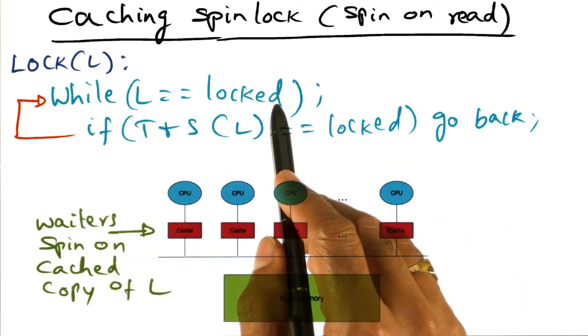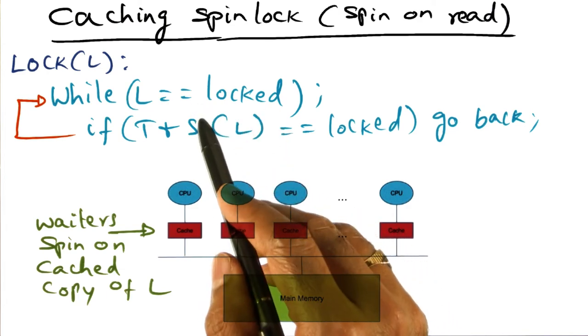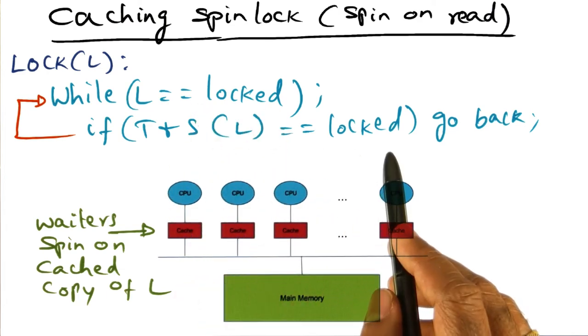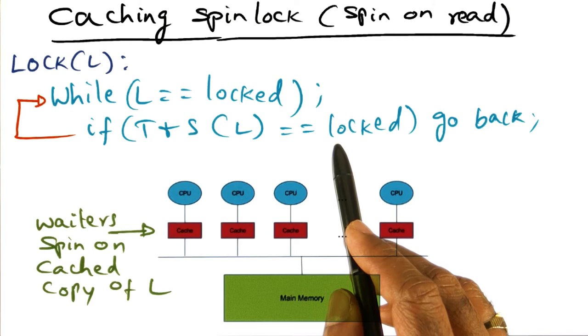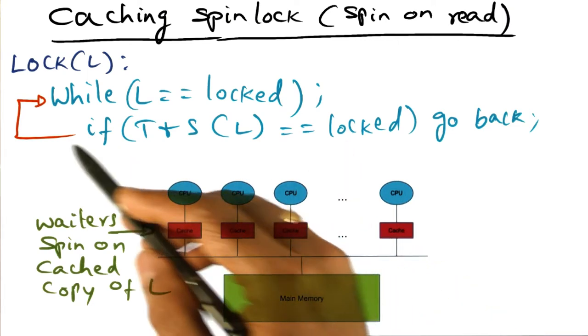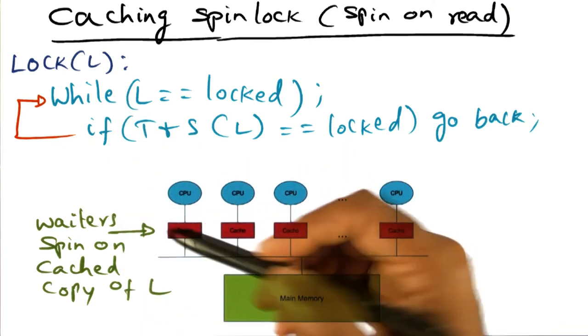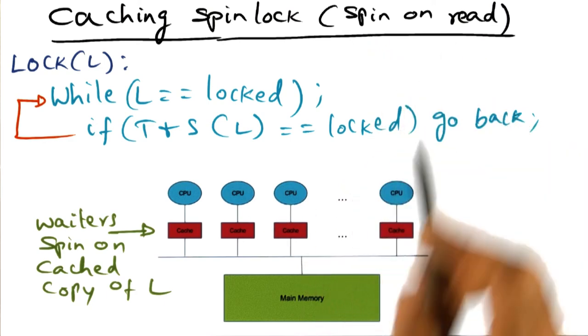The idea is you spin locally. When you notice that the lock has been released, you try to do a test and set. If you get lucky, you win. If you lose, you go back and spin again locally. So that's the idea behind spinning on read.